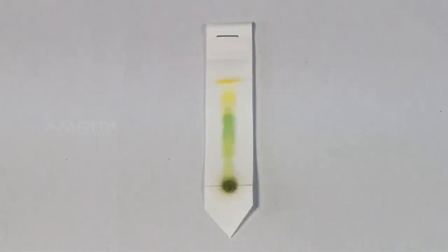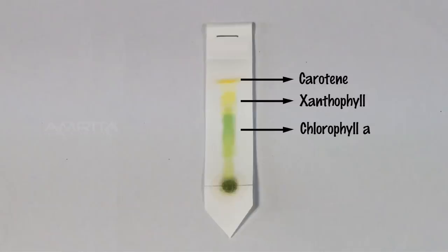Result: The topmost orange-yellow band of pigments in the separation corresponds to carotene. The yellowish band appearing below it indicates the xanthophylls. The third from the above dark green band represents chlorophyll A. The lowermost yellowish green band is that of chlorophyll B.